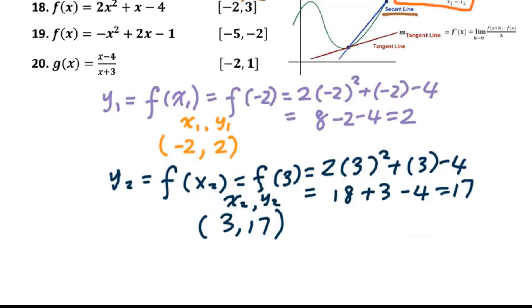So slope of a secant line now, that equals... plug the formula. y2 minus y1, that's 17 minus 2. x2 minus x1, that's 3 minus negative 2, that is plus 2. So we got the denominator is 5, numerator that's 15. We got 3. That's the answer for number 18. Slope for the secant line equals 3.